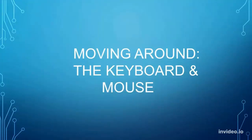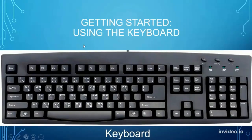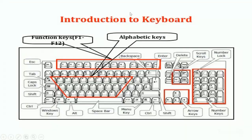Starting by moving around the keyboard and the mouse. So obviously here we have our keyboard. This is a standard keyboard with a number pad on the side, numbers at the top, and function keys at the top. The escape key is used to exit most things. The tab key is to either tab out to a different page or go on to the next selection. The caps lock key makes the letters capitalized or uncapitalized. The shift key does something similar — if you hold it while typing, it'll capitalize your letters.